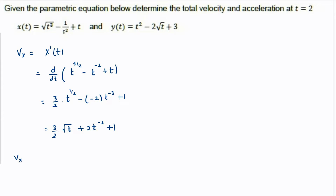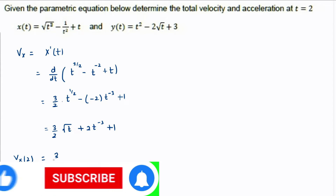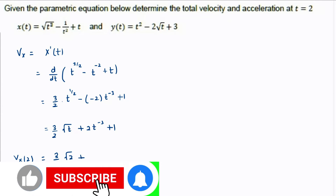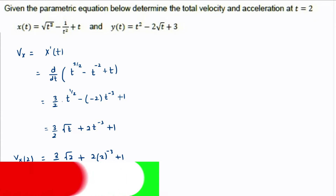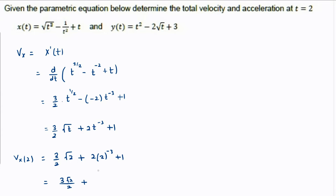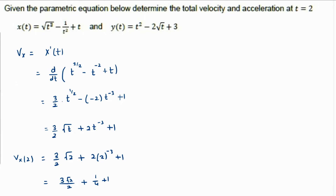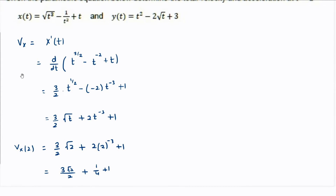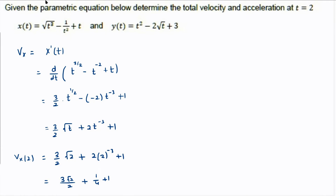At t equal to 2, Vx(2) = 3/2 times root 2 plus 2 times 2 raised to minus 3 plus 1. This becomes 3 root 2 over 2, plus 2 over 8 which is 1/4, plus 1. So that is the x component of velocity at t equals 2.